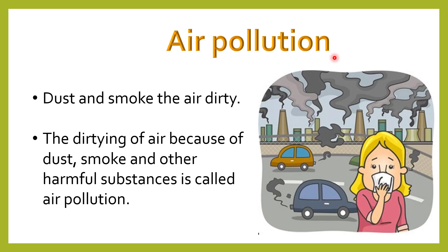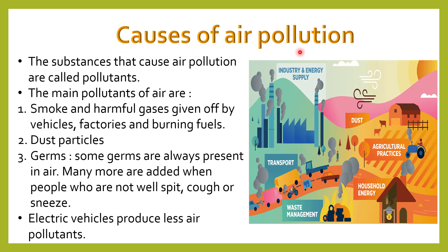Now we will discuss air pollution. Dust and smoke make the air dirty. The dirtying of air because of dust, smoke, and other harmful substances is called air pollution. The substances that cause air pollution are called pollutants. The main pollutants are smoke and harmful gases given off by vehicles, factories, and burning fuels, as well as dust particles and germs. Many more germs are added when people who are unwell spit, cough, or sneeze. Electric vehicles produce less air pollutants, so we must use more electric vehicles.